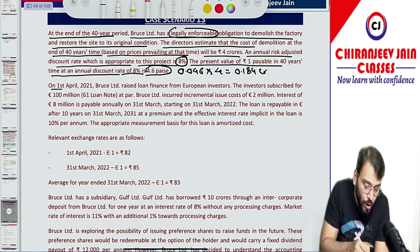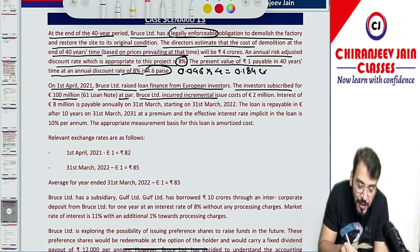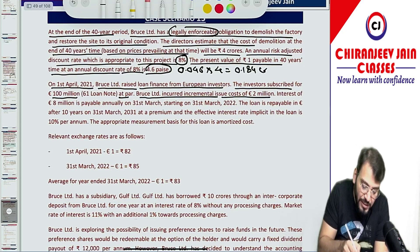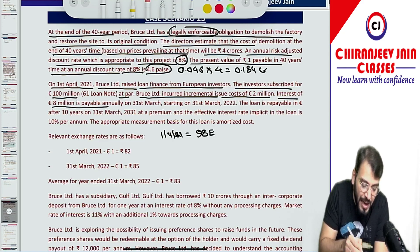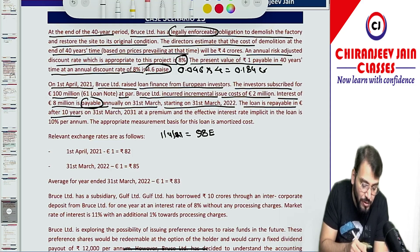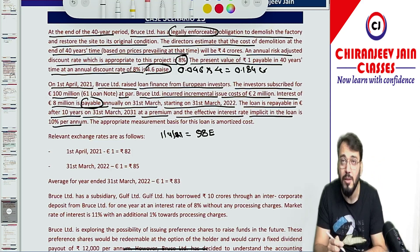Let us come to the second point. On 1st April 2001, Bruce Limited raised a loan financed from a European investor. The investor subscribed for euro 100 million at par. Bruce Limited incurred an incremental issue cost of 2 million — this is a transaction cost to be deducted from the loan amount. So the initial liability on 1st April 2021 will be 100 minus 2, that is 98 euro. The interest of 8 million dollars is payable annually on 31st March, starting on 31st March 2022. The loan is repayable in euro after 10 years on 31st March 2031 at a premium, and the effective interest rate implicit in the loan is 10%.